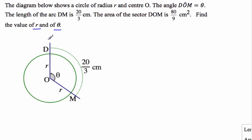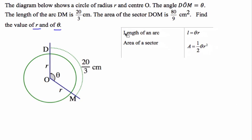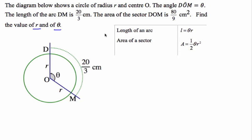Two variables we have to find there. So what do we have to do if we have two variables? We're going to need two equations. And we're given the length of the arc and the area of the sector, and this is from our formula booklet. Okay, so those are both given in terms of radians, so we need to make sure our calculator is in radians.